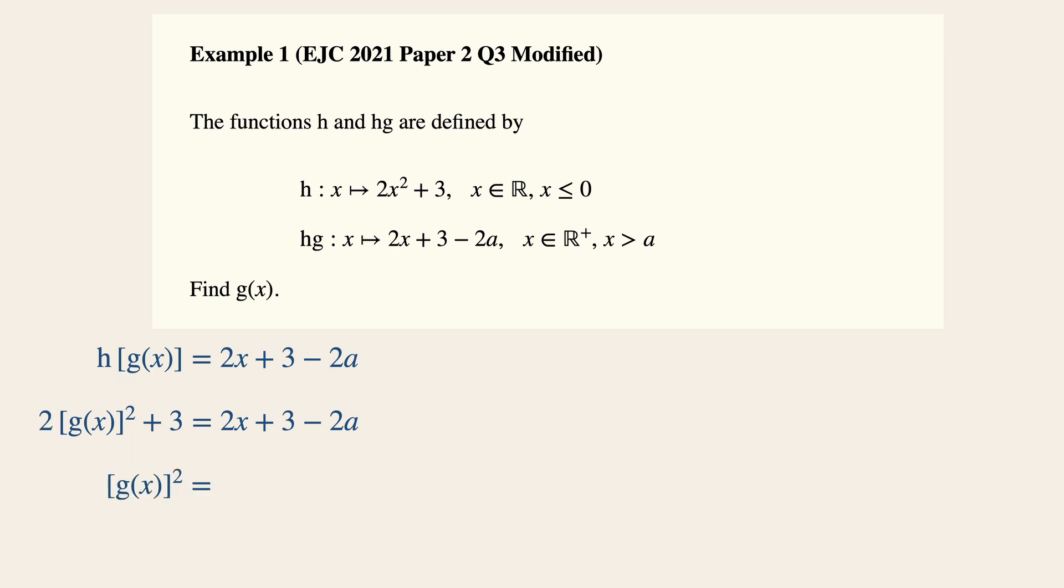Our objective here is to make gx the subject since we want to find the function g. So we will have gx whole thing squared equals to x minus a. And the function gx is either negative square root x minus a or positive square root x plus a. Now we are going to reject the positive value because for a composite function to exist, always remember the range of g must be a subset of the domain of h.